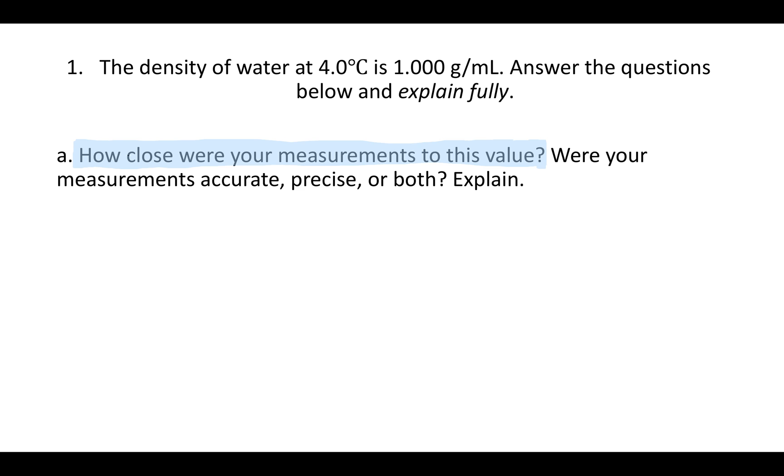The first question is how close were your measurements to this value? To answer this, you want to find the percent error to answer this quantitatively. So the percent error is the actual value that you got in the lab minus the theoretical value, over the theoretical. Then just make it positive. Those vertical bars are the absolute value bars. They just mean take that and make it positive, and multiply by 100.